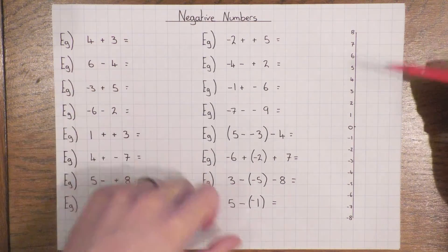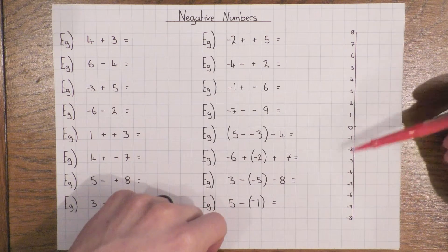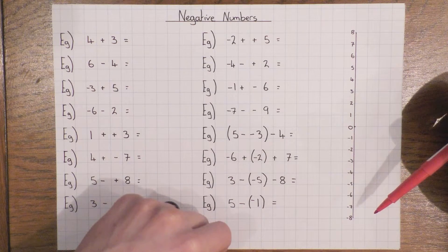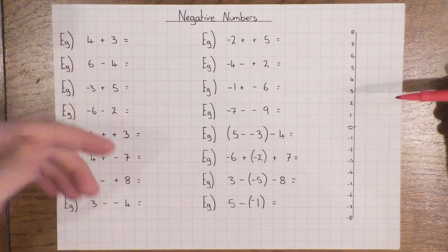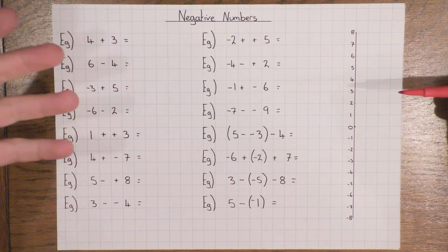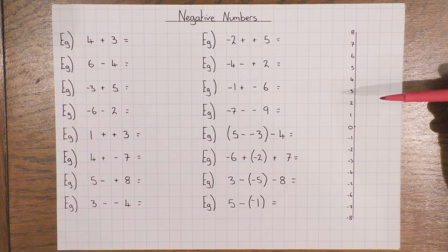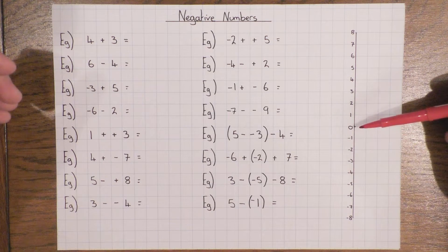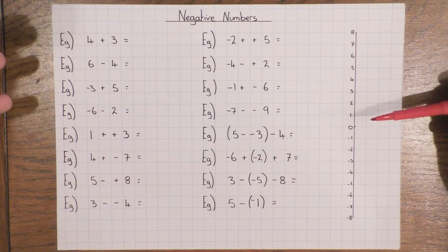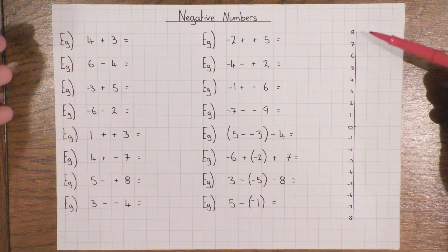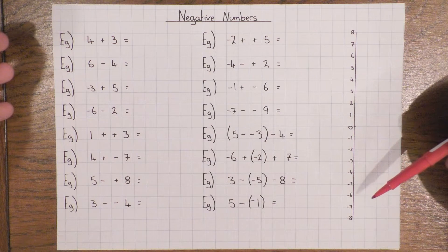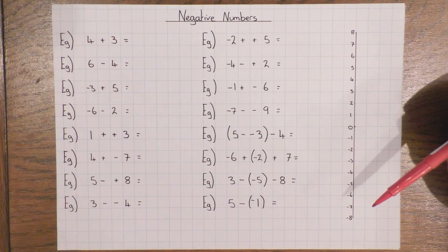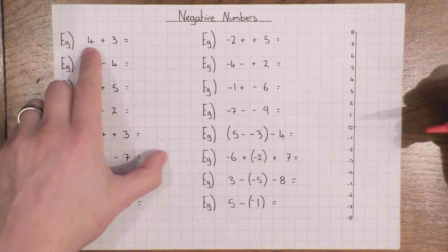I always recommend drawing a number line to help you, because people tend to get the right idea of what's going on but then make silly mistakes, especially when we start dealing with negatives. Just to make things easy and make sure you get the right answer — it takes 30 seconds — I highly recommend drawing yourself a very quick number line. So let's get started with the first one.